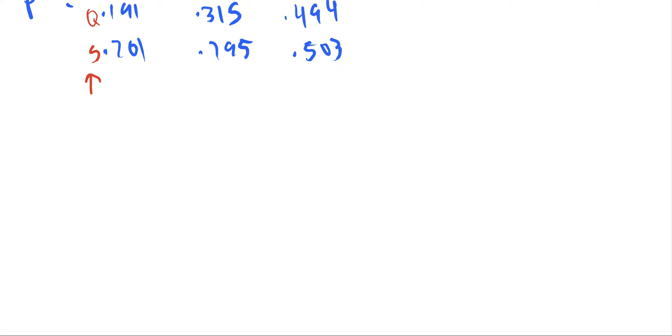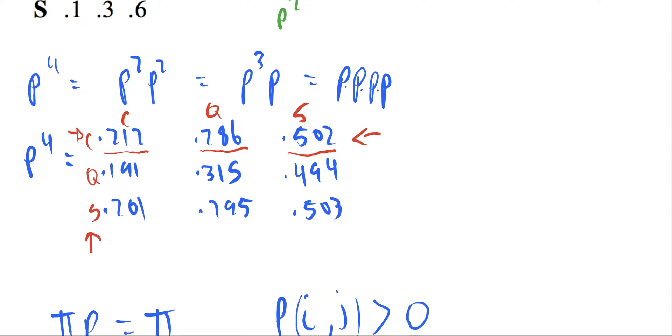So what we're trying to find here is pi times our transition matrix eventually goes to pi. This is the definition of a stationary distribution. And if we want to find irreducibility and aperiodicity, we just need to note that all the probabilities in our chain are greater than zero, which they are.